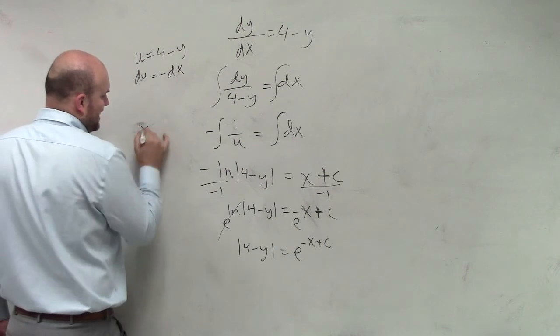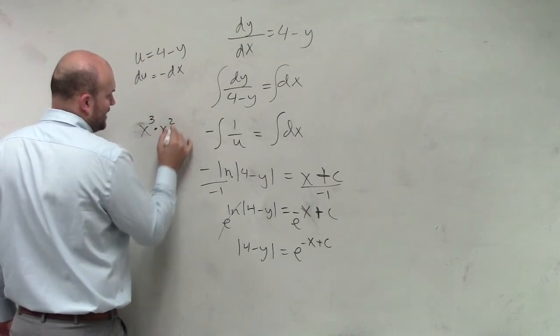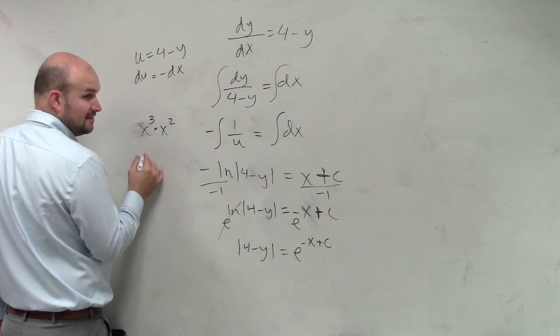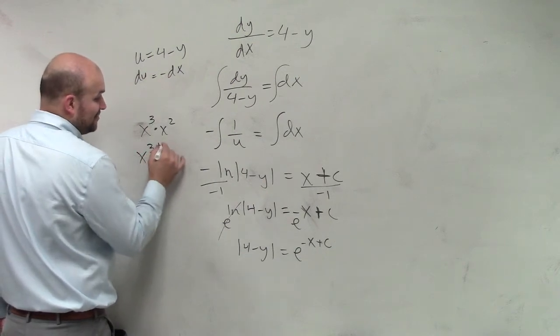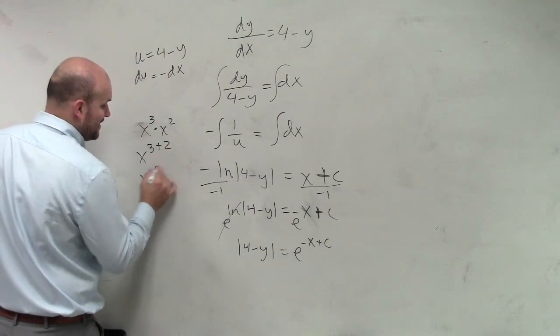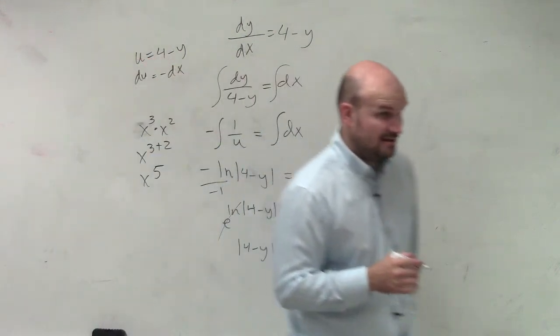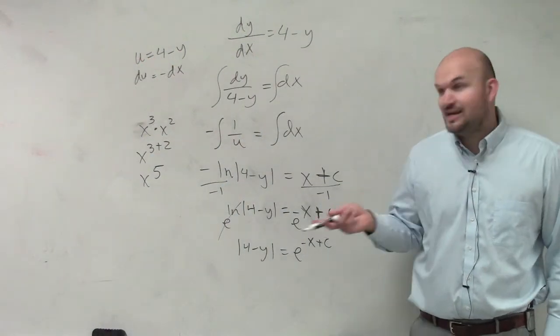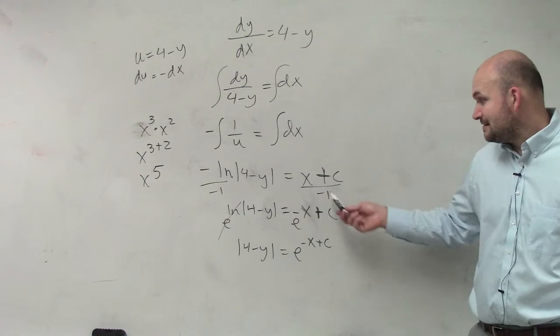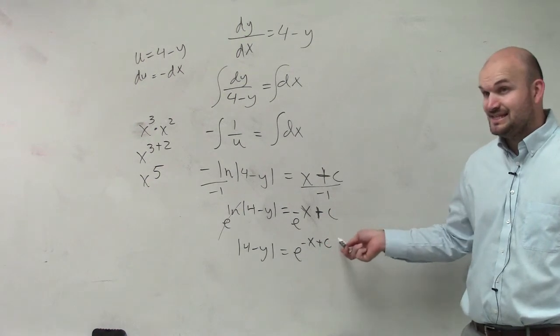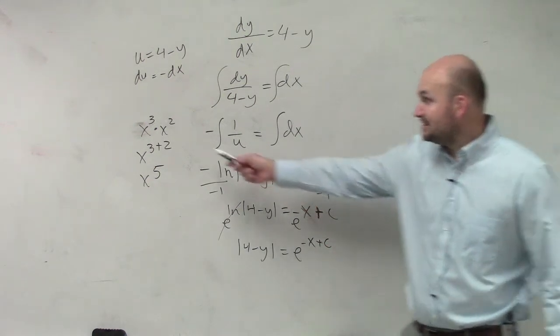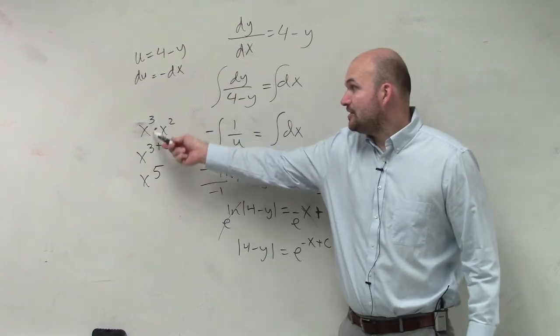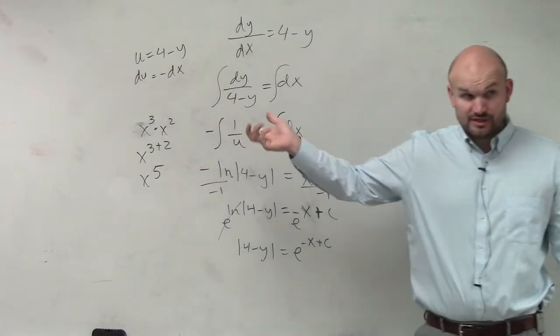Now, a quick little side note. If you guys remember, x cubed times x squared is equal to x to the 3 plus 2, which is equal to x to the 5th, right? I want you guys to understand that if I have e to the negative x plus e to the c, that is really the same thing as me saying e to the 3rd times e squared.